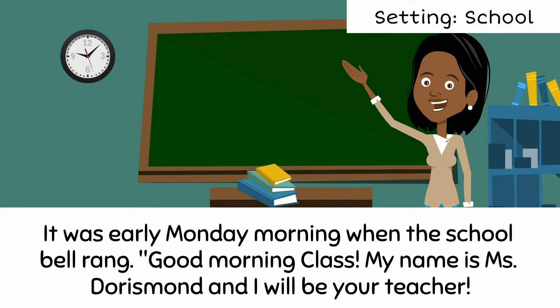Let's review what we have learned. The setting is the time and location within a story. Settings can be real or imaginary and can change throughout the story. You can determine the setting by looking at the illustrations and words the author uses. Authors may use adjectives to describe things to help you understand the setting.